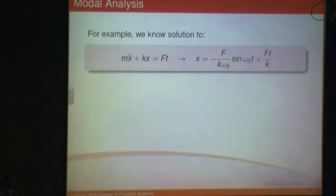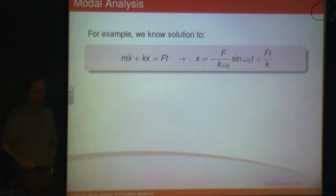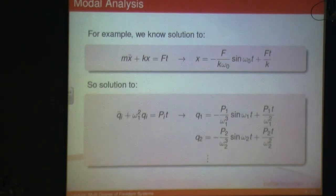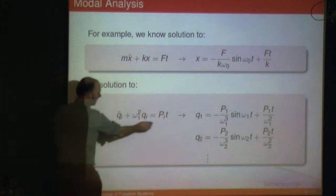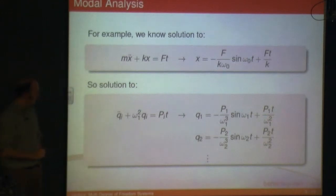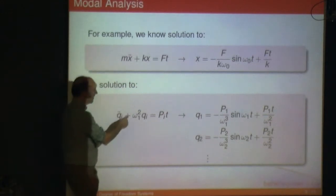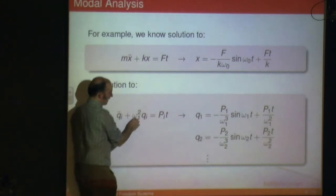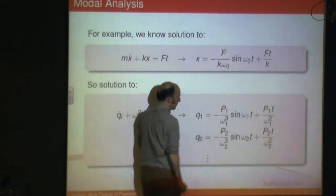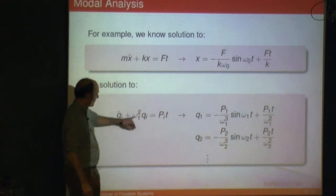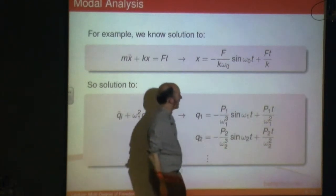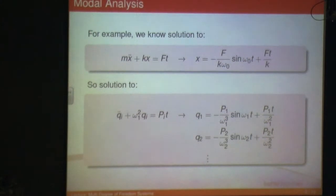If we had a ramp function f·t, again we look at the equation sheet — we solved for what happens when you've got a linearly increasing force, and the solution was: minus f/(k·ω₀) × sin(ω₀·t) plus f·t/k. With our modal equation in the same format, we've got pi·t, so we know we're dealing with a ramp function, and you simply substitute in: k is ωi², so ωi² times ωi is ωi³, and p1 instead of f, giving p1·t/ωi². You just make the substitutions in and get the solution.